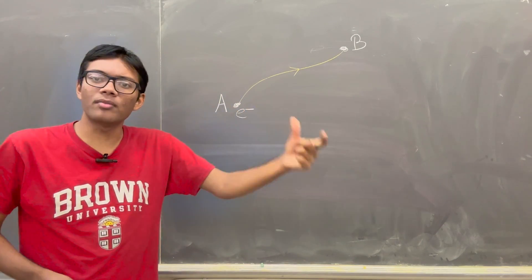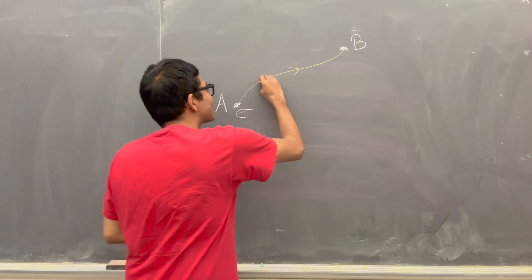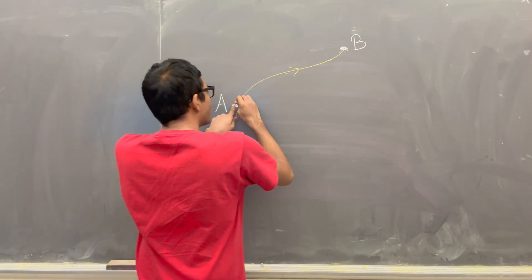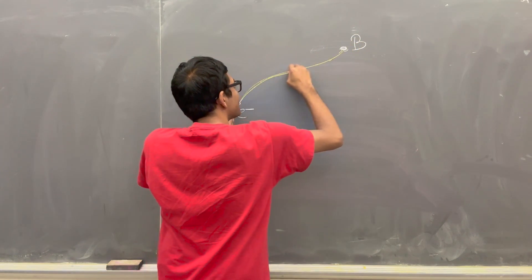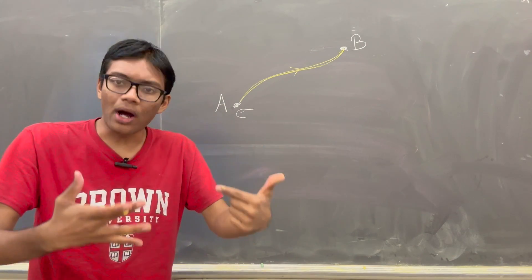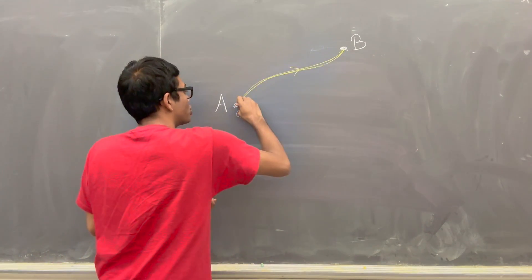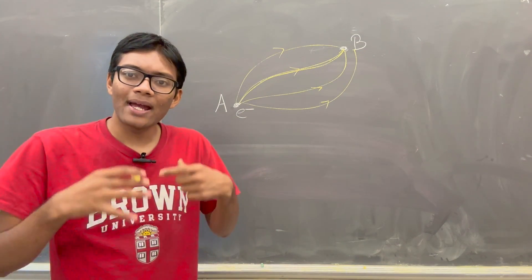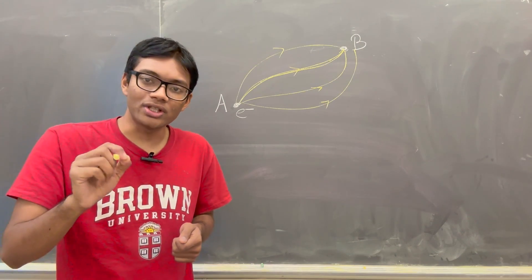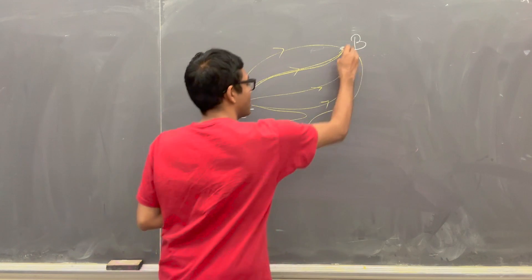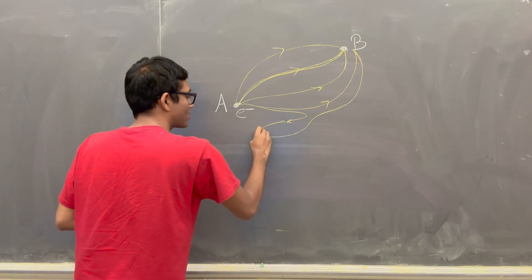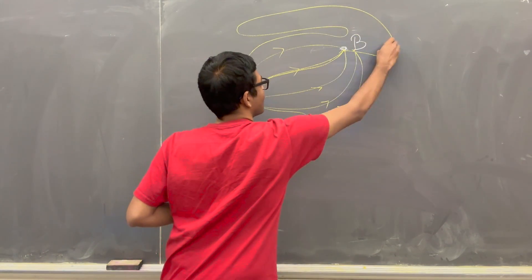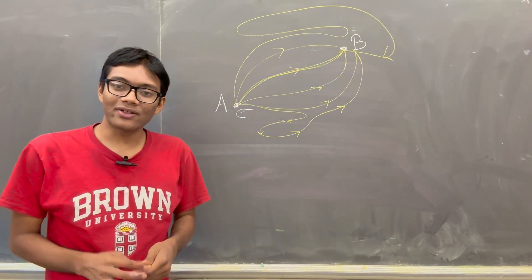Even if I give you the initial condition — the initial position or momentum of the electron — there's no way you can tell me the electron takes precisely this path between point A and point B. So what Feynman proposed was that instead of the electron going from point A to point B using a well-defined path, the electron takes all possible paths between A and B. It takes this path, but it also takes this one, and this one, and this one. The electron can also take paths that defy the conservation of energy. It can even go backwards — a path that goes backwards and then moves forwards — or crazy paths like this, according to Feynman's path integral formulation.